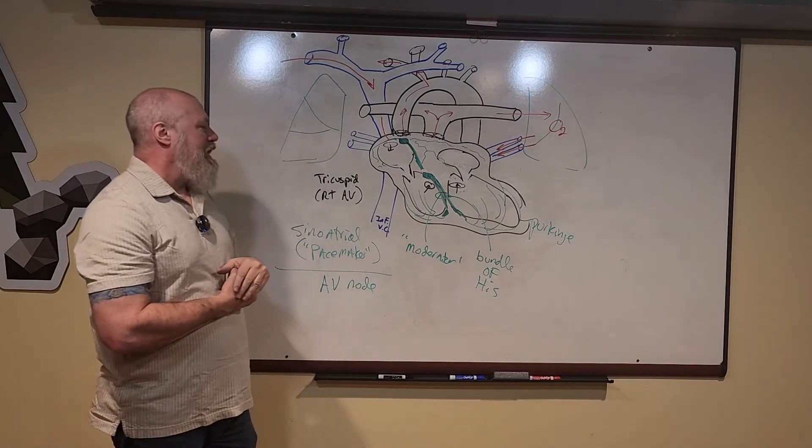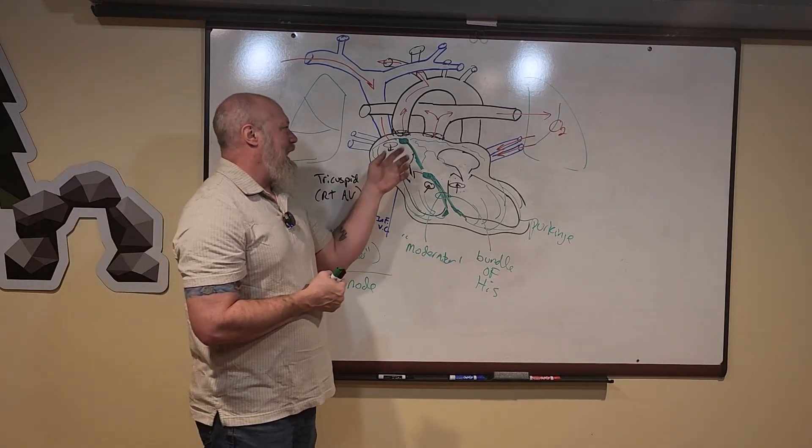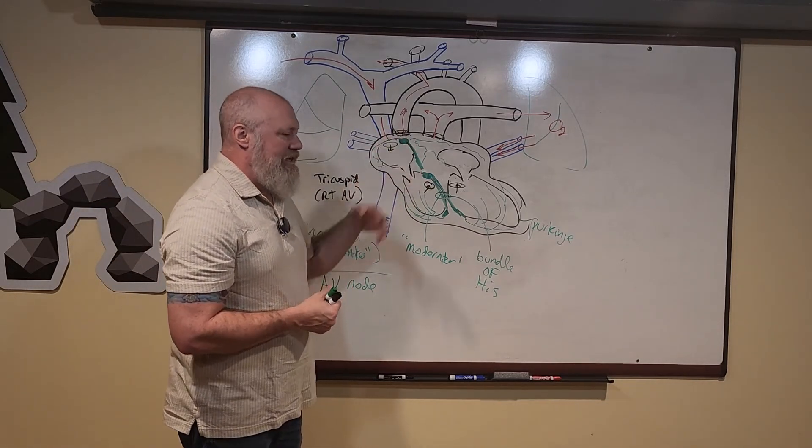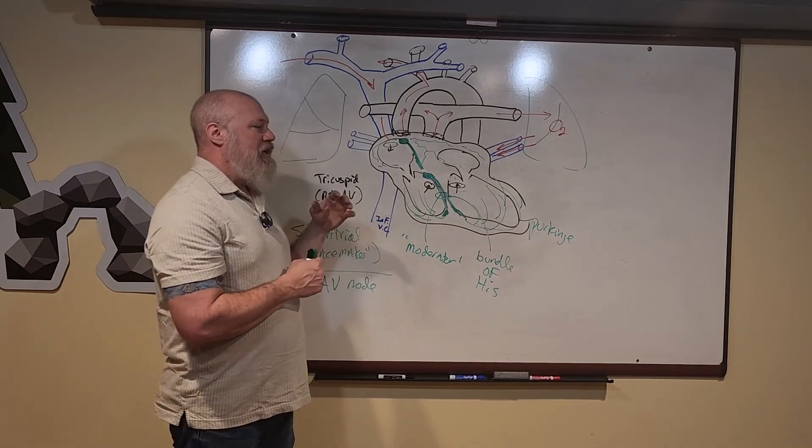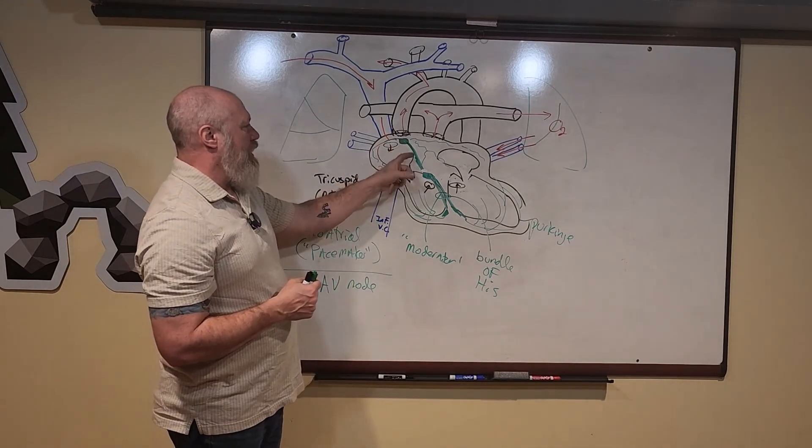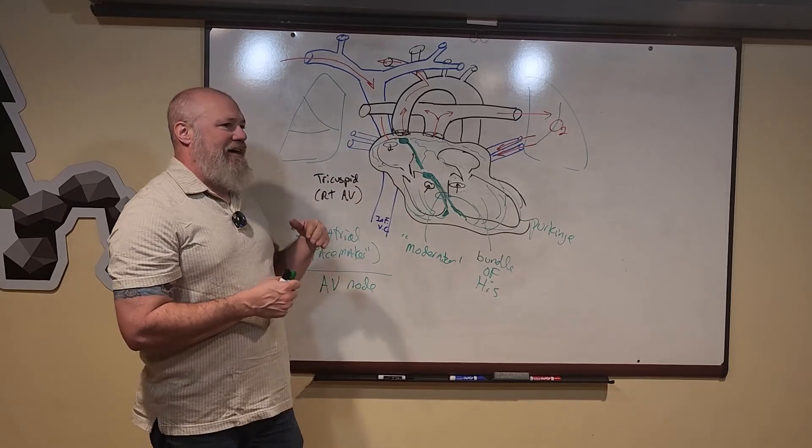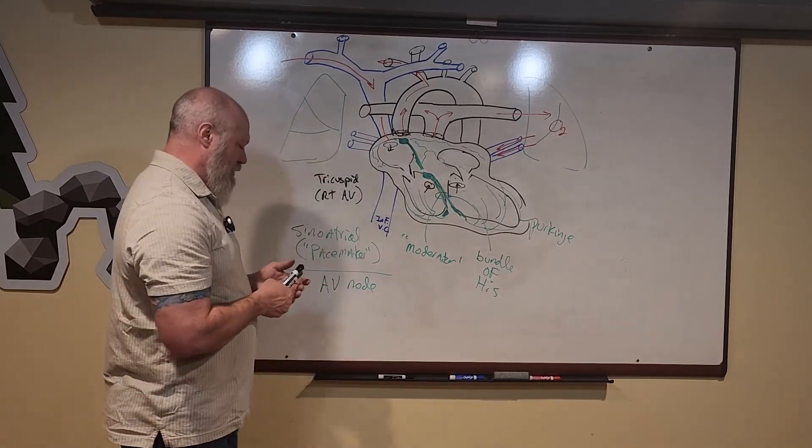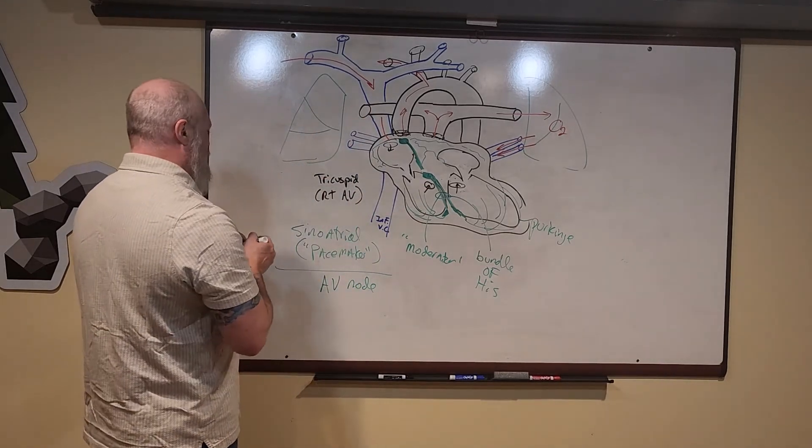That's the conduction system of the heart. Sometimes it messes up and you get some weak signals, conflicting signals. Your muscle of your heart can start depolarizing in odd, asynchronous ways, and that would be called fibrillation.